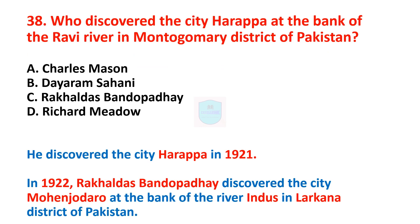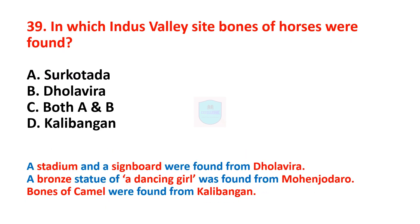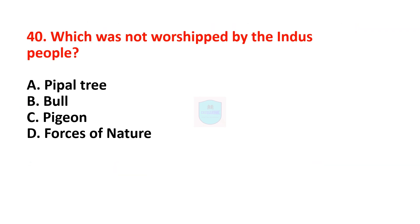Next question: who discovered the city Harappa at the bank of the Ravi river in Montgomery district of Pakistan? Correct answer is Daya Ram Sahni, who discovered Harappa in 1921. In 1922, Rakhaldas Bandyopadhyay discovered Mohenjo-daro at the bank of the Indus in Larkana district. Next question: in which Indus Valley sites were bones of horses found? Correct answer is Surkotada and Dholavira. A stadium and signboard were found at Dholavira; a bronze dancing girl statue at Mohenjo-daro; bones of camel at Kalibangan. The last question: which was not worshipped by the Indus people? Correct answer is forces of nature. Indus people worshipped the peepal tree, bull, and pigeon, but did not worship forces of nature.